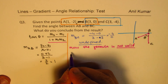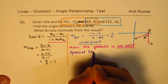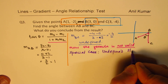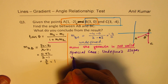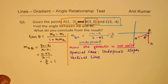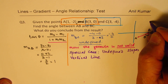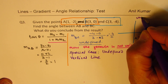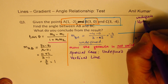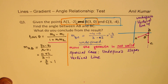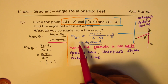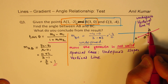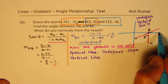Undefined slope means a vertical line. So the line BC is actually a vertical line. Knowing the slope of AB, which is 1, we can actually find the angle which AB makes with the x-axis.